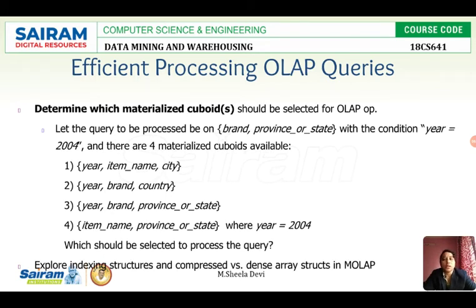Here is an example. The query requires brand and province/state with the condition year equals 2004. There are four pre-computed materialized cuboids available. The first cuboid has year, item name, and city. The requirement is brand and province/state. Brand is not there and province/state is not there — only city is there — so we cannot go with this cuboid.